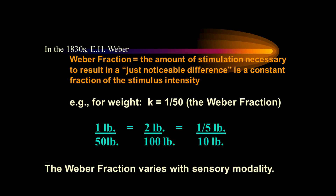As you learn about psychophysics, one thing I absolutely want you to know would be the names of two very important psychophysicists. The first of these is E.H. Weber. E.H. Weber was a psychophysicist who made a very important and useful contribution to psychophysics, specifically what we call the Weber fraction. The definition of the Weber fraction is: the amount of stimulation necessary to result in a JND — a just noticeable difference — is a constant fraction of the stimulus intensity.